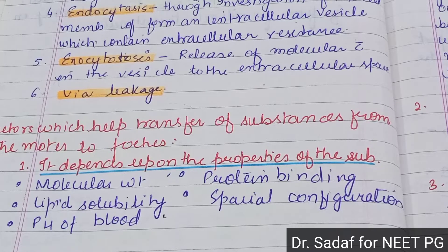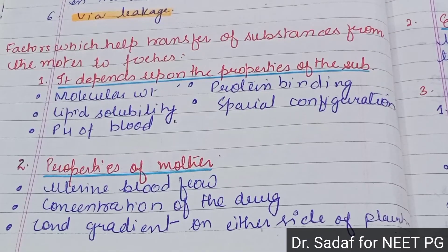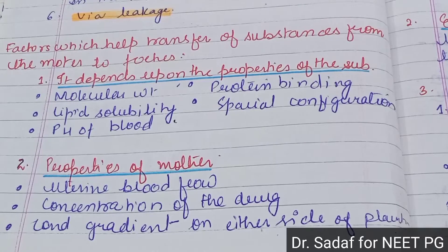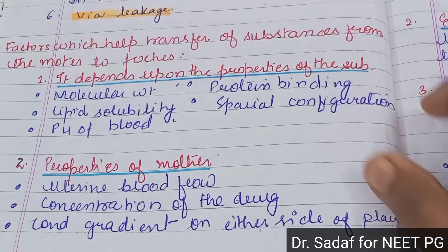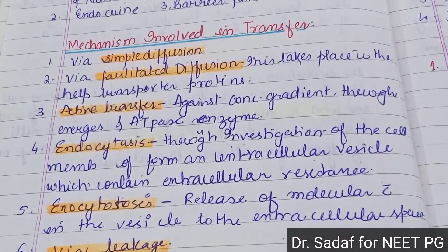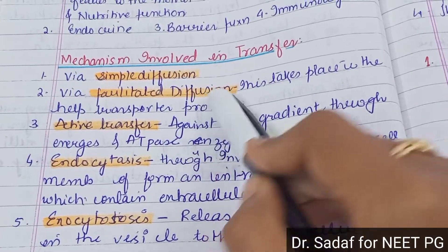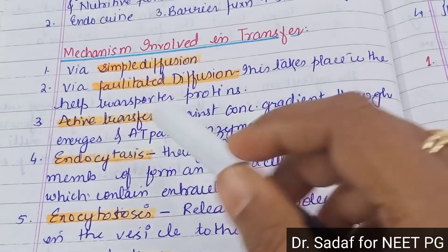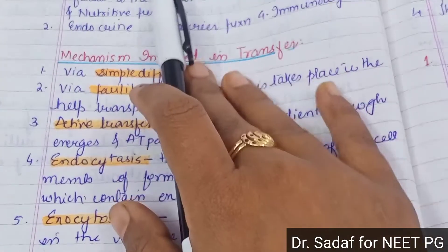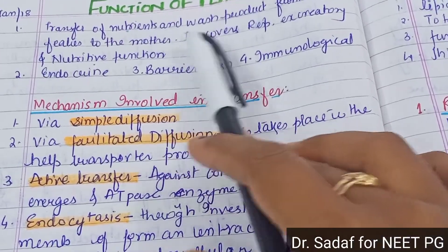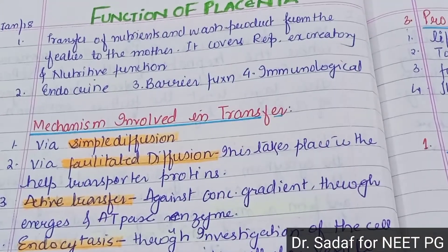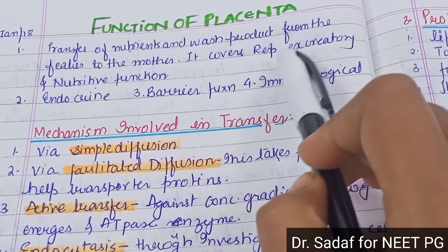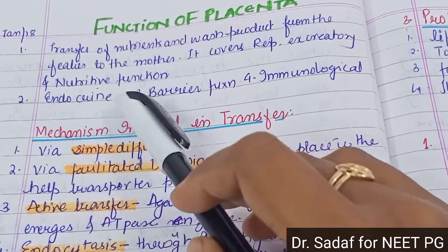To summarize, the factors affecting transfer include properties of the substance — molecular weight, lipid solubility, pH of the blood, protein binding, and spatial configuration — as well as uterine blood flow, blood concentration, and the concentration gradient on either side of the placenta. The mechanisms of transfer include simple diffusion, facilitated diffusion, active transfer, endocytosis, exocytosis, and leakage.